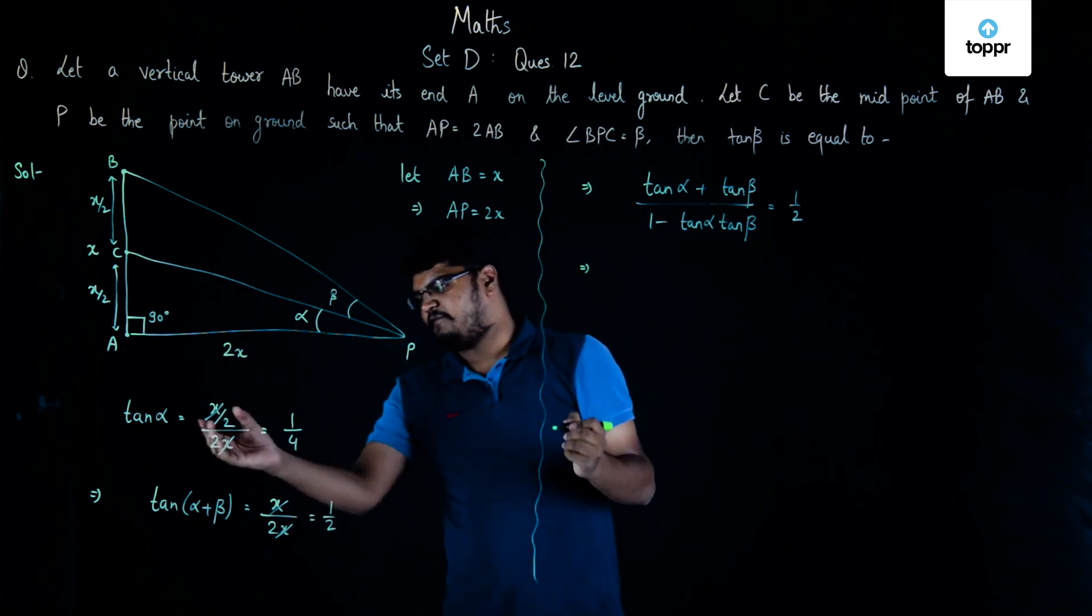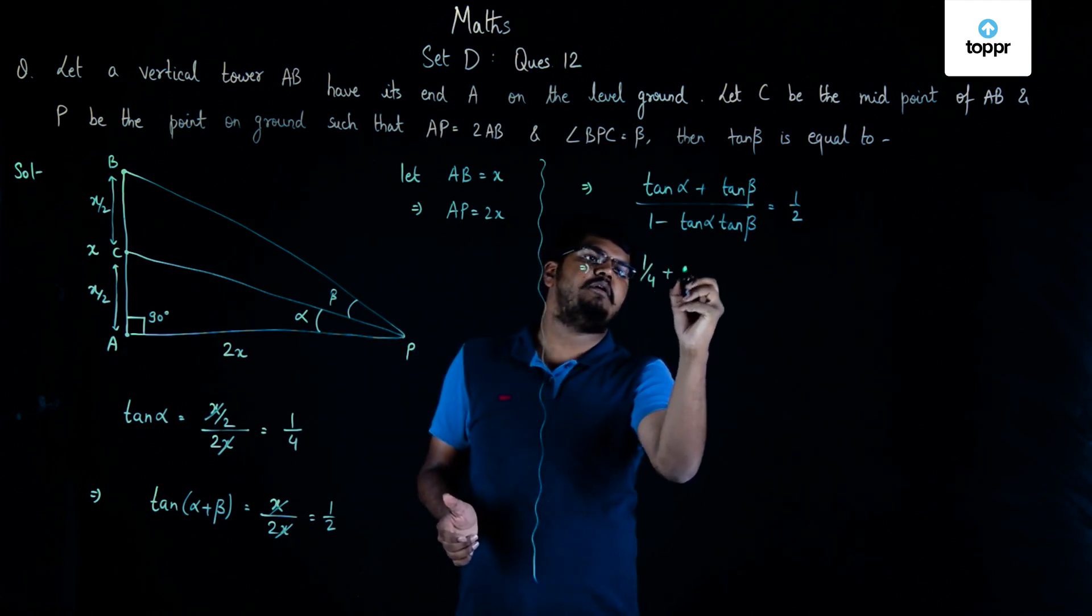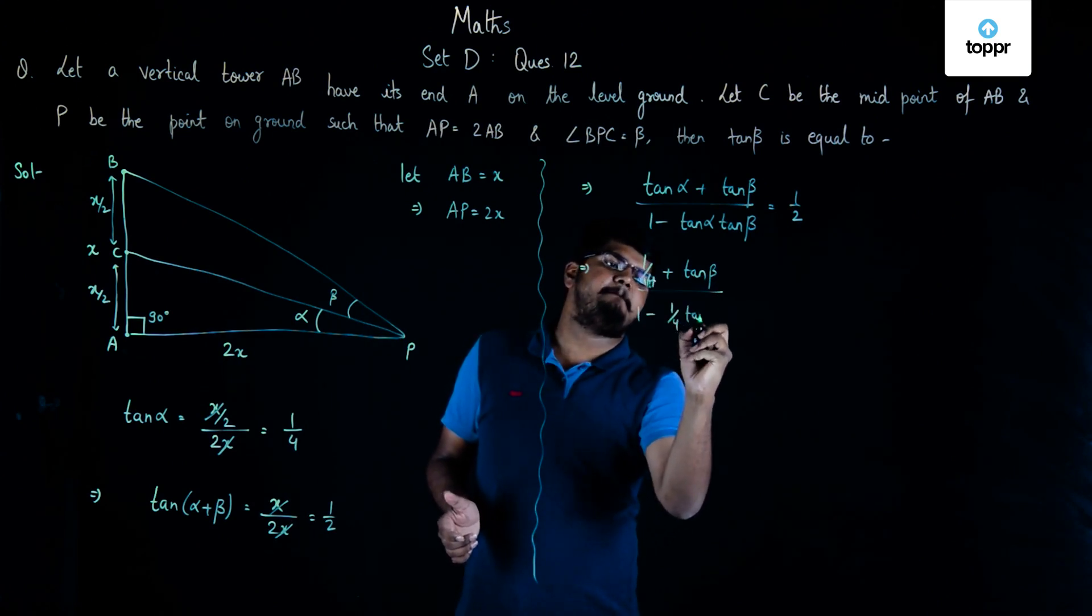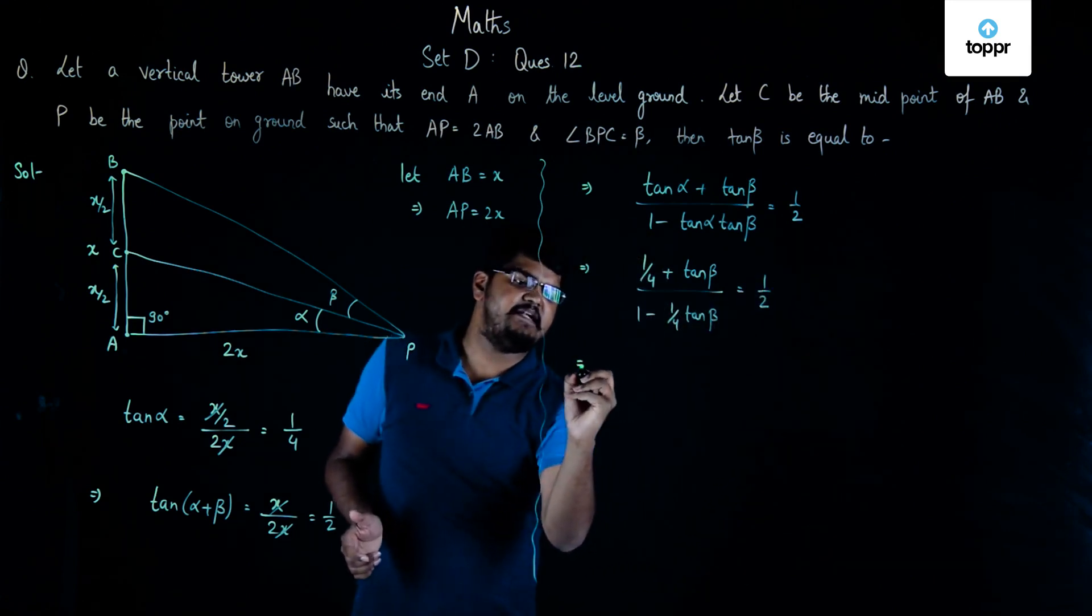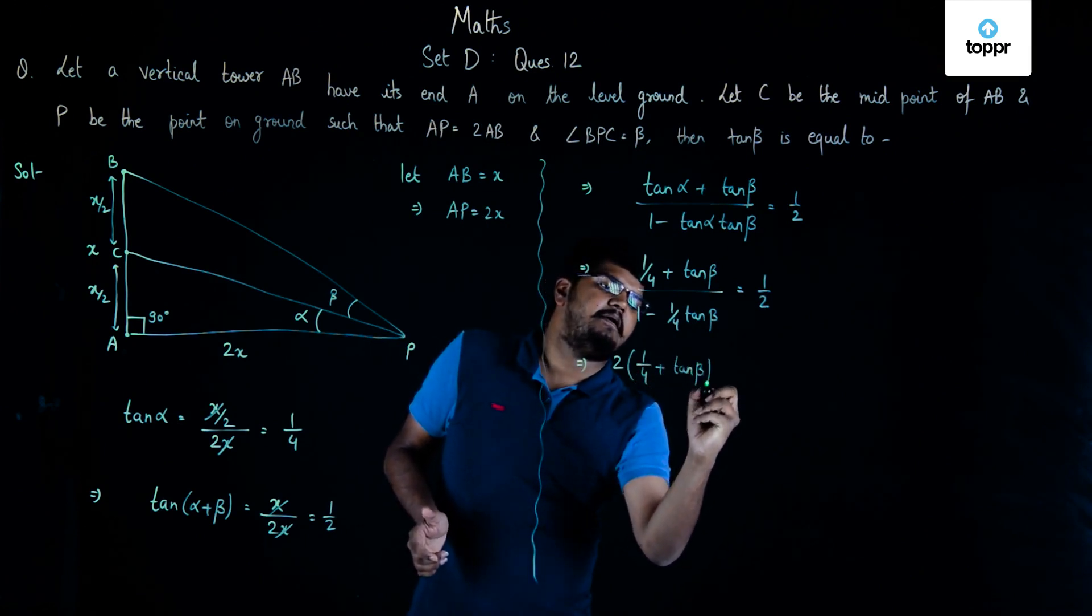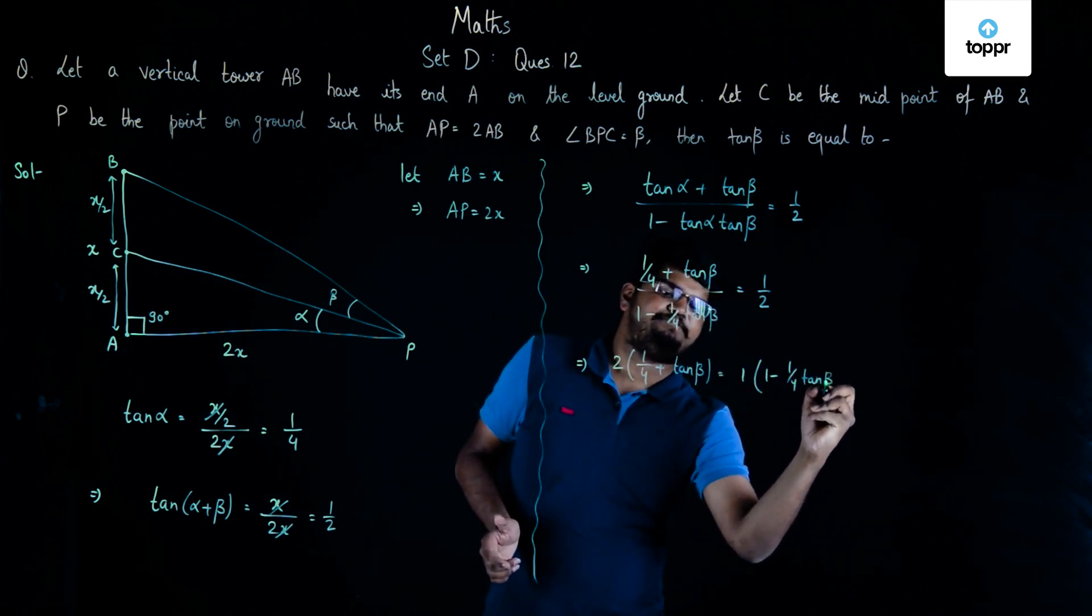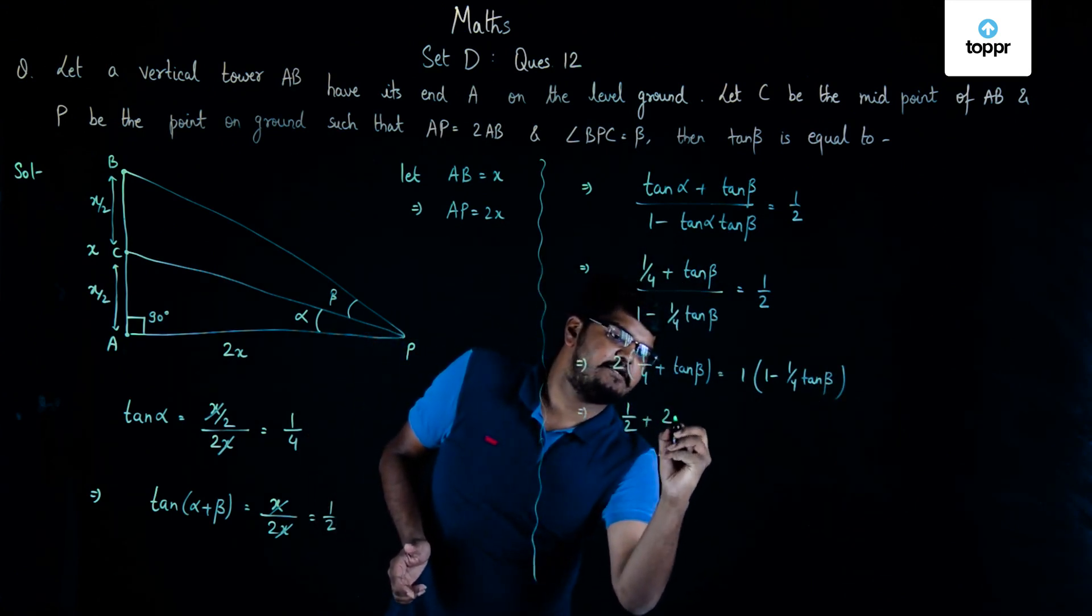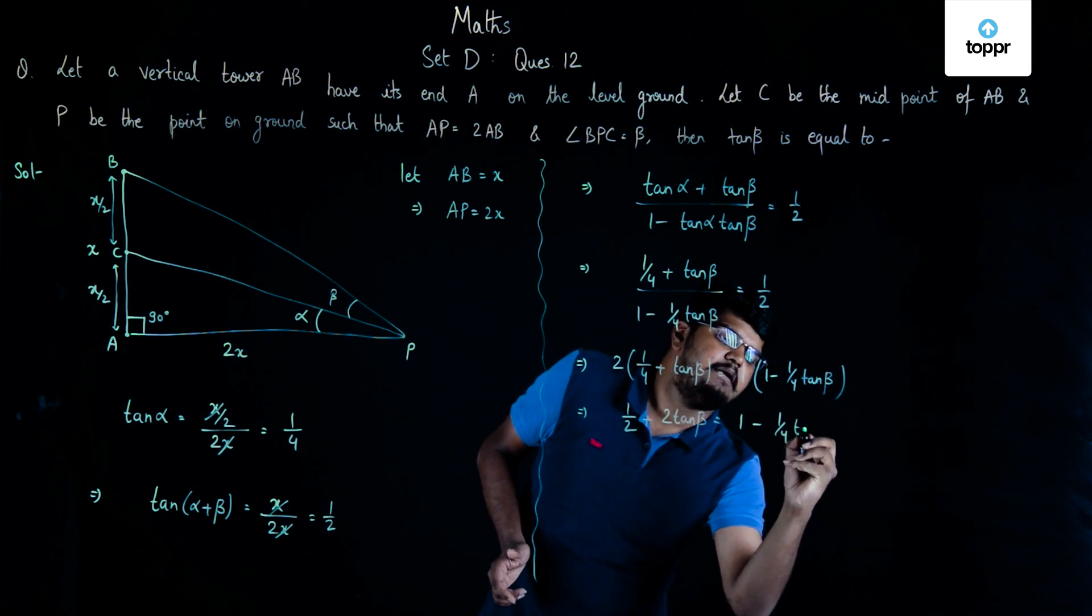Now, if we substitute the value of tan alpha is equal to 1 by 4 from here in this particular equation, we are going to get this as 1 by 4 plus tan beta upon 1 minus 1 by 4 tan beta is equal to 1 by 2. We can cross multiply this 2 on the left hand side, it will become 2 times 1 by 4 plus tan beta is equal to 1 into 1 minus 1 by 4 tan beta. If we solve it, it will become 1 by 2 plus 2 tan beta is equal to 1 minus 1 by 4 tan beta.